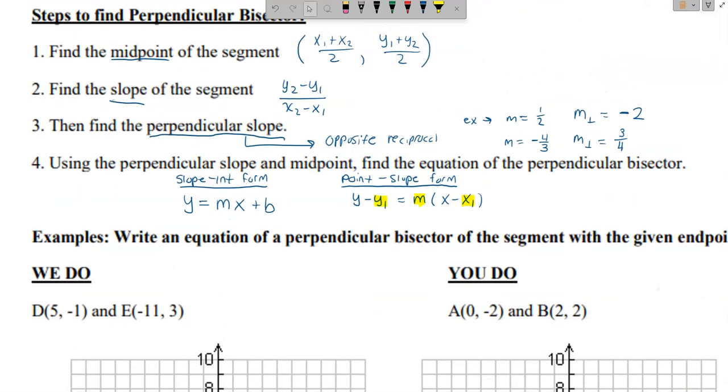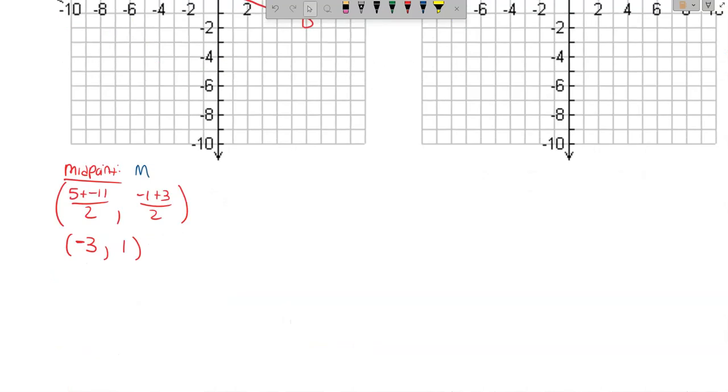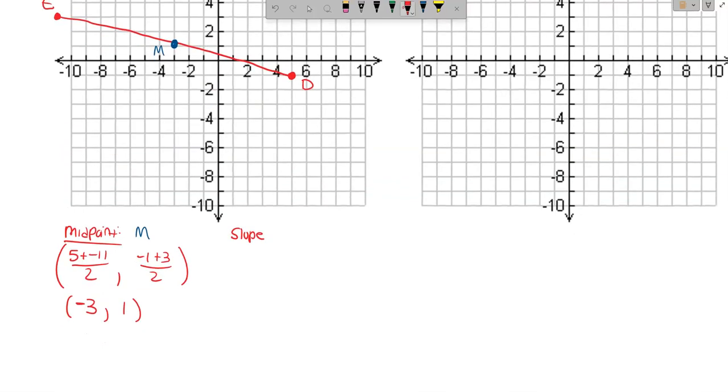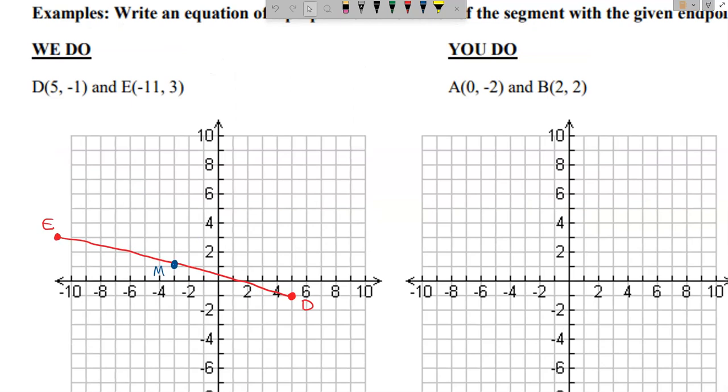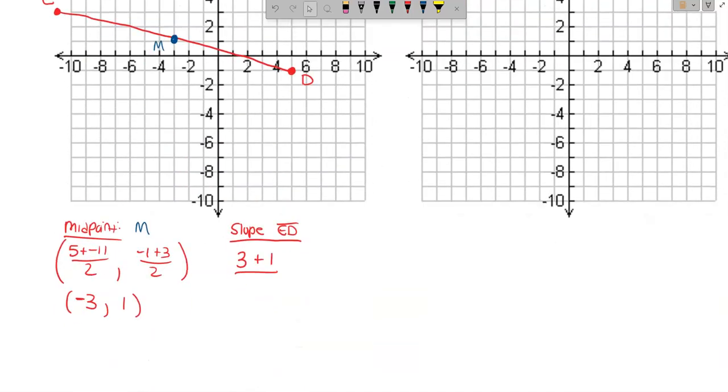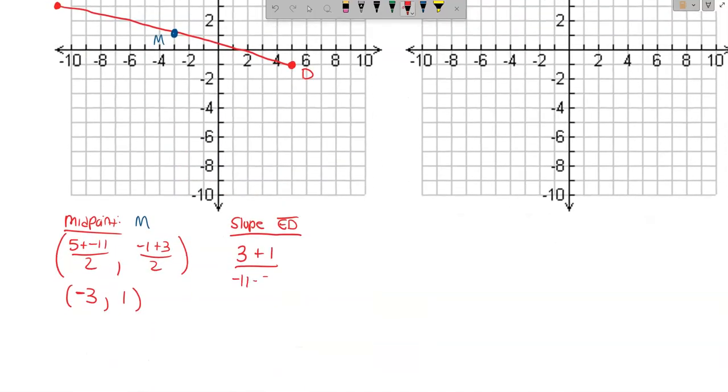Step number 2 is, and we're looking up here at the top, we're going to find the slope of our segment. So the slope of, and I'm actually going to go ahead and call it slope of ED, just so we remember that that's what we're actually looking for. So it's y2 minus y1, so 3 minus negative 1, or 3 plus 1, over negative 11 minus 5. Okay, so 3 plus 1 gives me 4. That's going to give me negative 16. So it looks like our slope simplified is going to be negative 1 fourth.